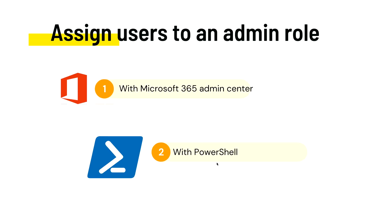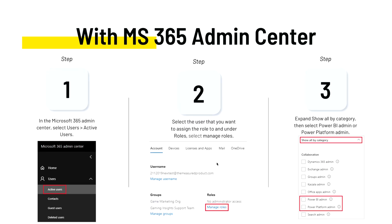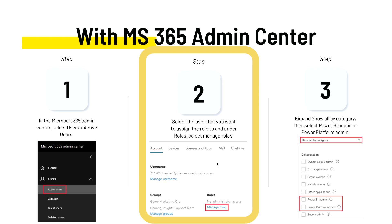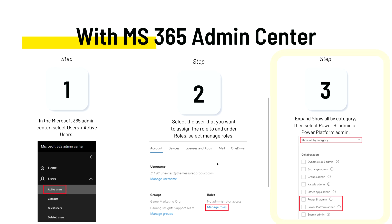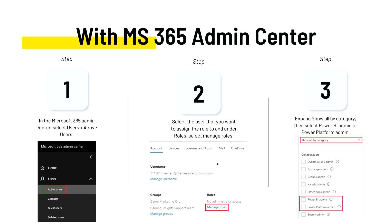There are two ways to assign a role: the Microsoft 365 admin center and PowerShell. Using the MS 365 admin center, first log into your Microsoft 365 admin center, go to Users on the left-hand panel, and click Active Users. Select the user you want to assign a role to, then under Roles click Manage Roles. A panel will pop up on the right-hand side where you can select the role to assign to that user.